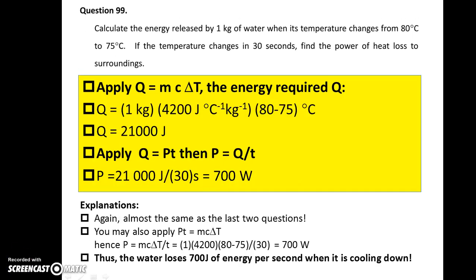Question 99. This time you have a kilogram of hot water and its temperature decreases by 5 degrees Celsius. So there is heat loss to the surroundings and you have to find the power of heat loss of the hot water. Similar to the last two questions, you have to find the energy that is released by the water, energy that is given out, divided by the time taken which is half a minute, which is 30 seconds, then you may find the power of heat loss.